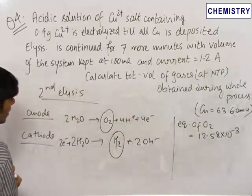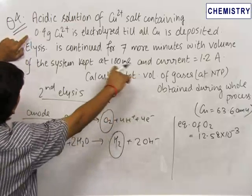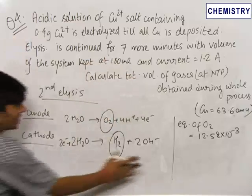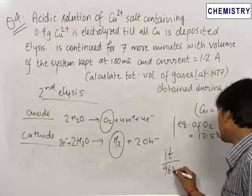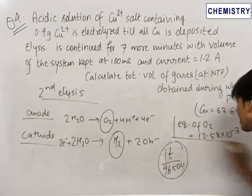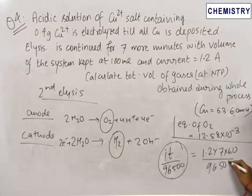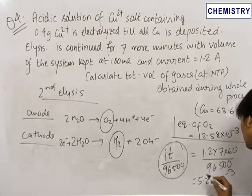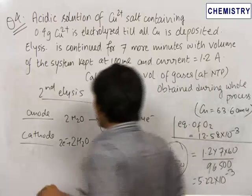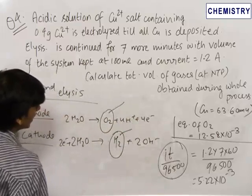Electricity is passed for 7 minutes through the solution. The number of equivalents produced is given by I × t / 96,500. This equals 1.2 × 7 × 60 / 96,500, which comes out to be 5.22 × 10⁻³. So the equivalents of both O2 and H2 produced in the second electrolysis are each 5.22 × 10⁻³.